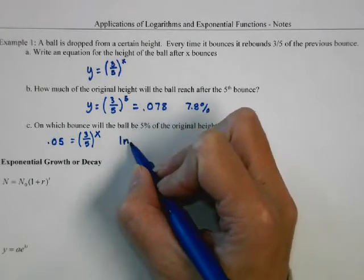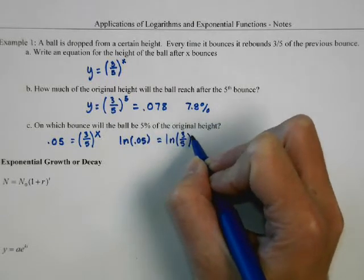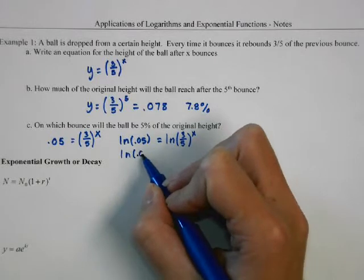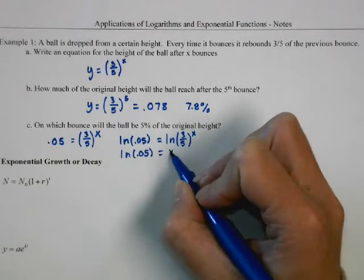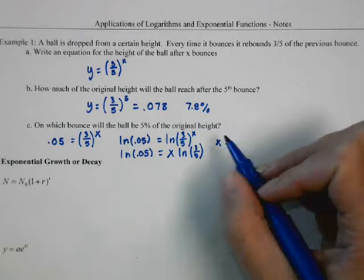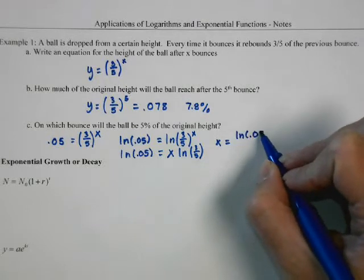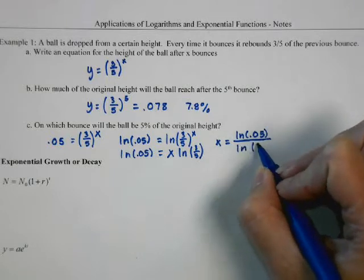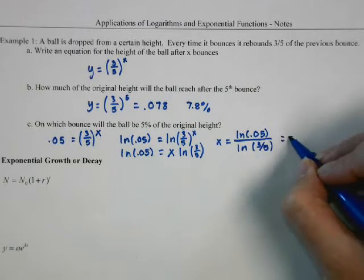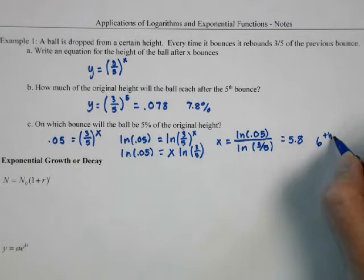I'm going to take the natural log — or log, it doesn't matter — of both sides. That allows me to take this x and bring it out front using the power rule. Then I'm just going to divide, so x equals this divided by that. Type this in the calculator with careful parentheses and you'll get about 5.8, which means it's going to take 6 bounces for it to be less than 5%.